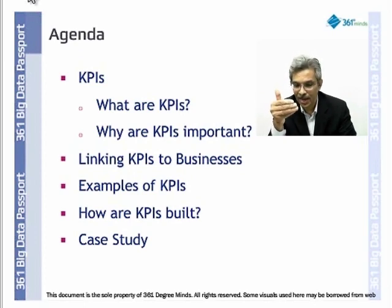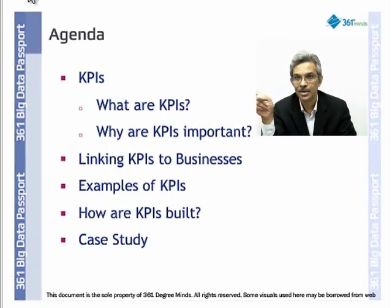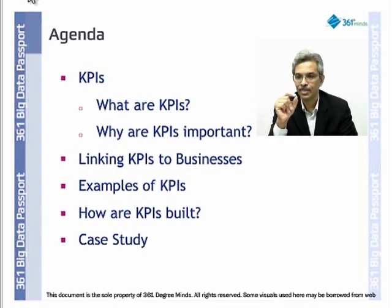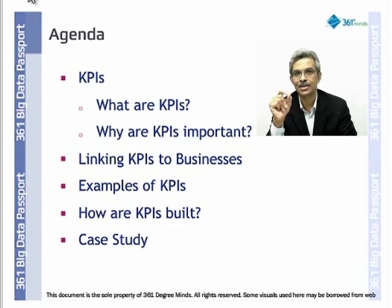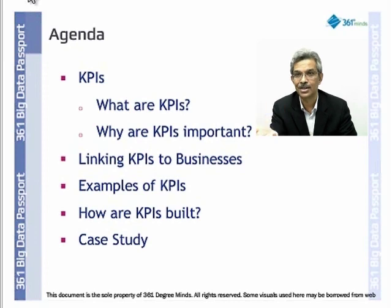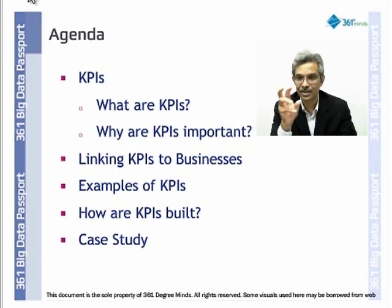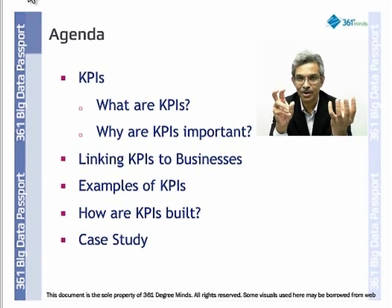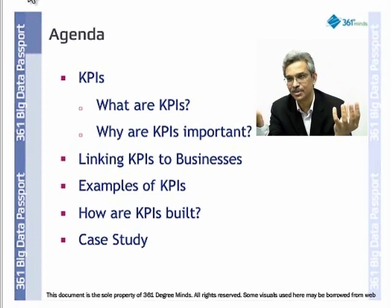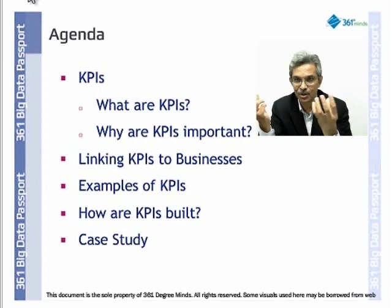The data engineer will define it in a manner that relates to a business outcome, which a business analyst can then use. For example, if customer satisfaction is consistently 7 or 8, that means the business is doing very well and customers are very satisfied. So a businessman interpreting 7 versus a data engineer interpreting 7 has to be similar, because 7 is defined by the data engineer, while the interpretation of 7 is done by the business analyst. They are complementary to each other.